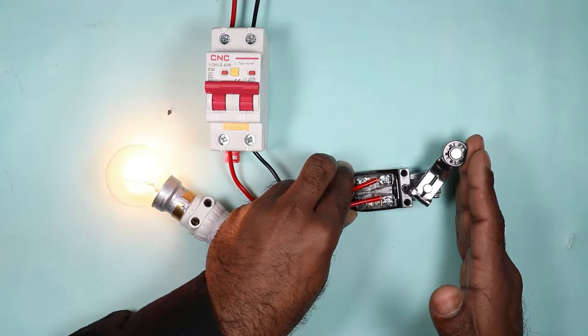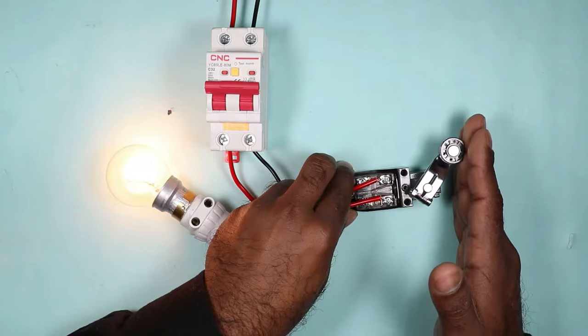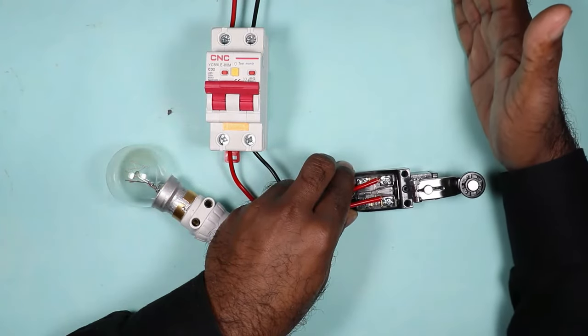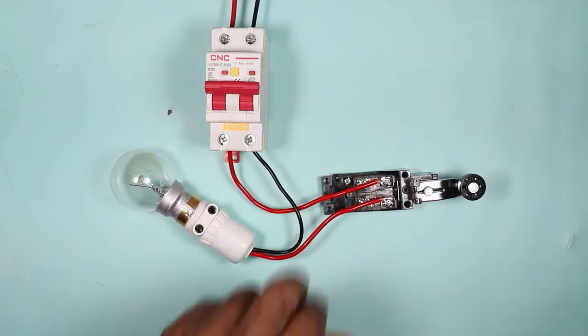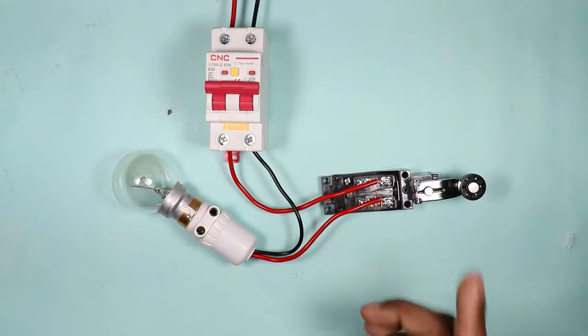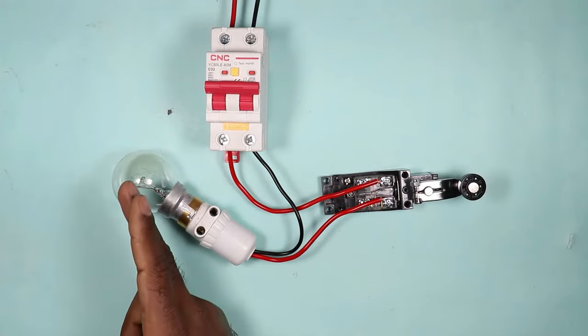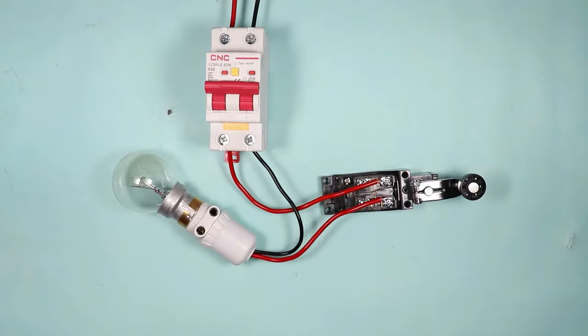This means now limit switch is generating output command. When the belt releases the switch, then limit switch comes back to original position and our lamp will turn off. On operating through NO contact, if limit switch does not operate, then this lamp or signal will not going to be generated.